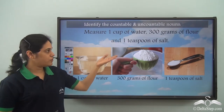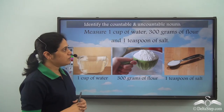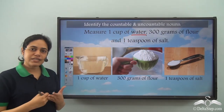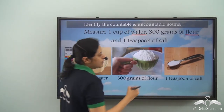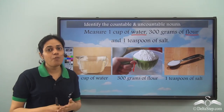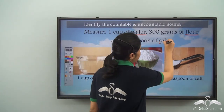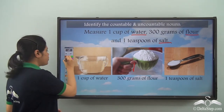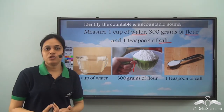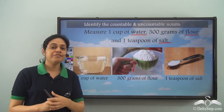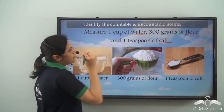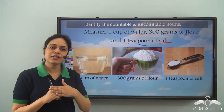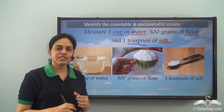Identify the countable and uncountable nouns in this sentence: 'Measure one cup of water, three hundred grams of flour, and one teaspoon of salt.' Water is an uncountable noun. Flour is also uncountable — we can never say 'how many flour.' Salt cannot be counted either. So water, flour and salt are uncountable nouns. What are the countable nouns? Cup — we can count cups, so cup is a countable noun. Similarly, teaspoon — teaspoons can be counted, so teaspoon is a countable noun. In this sentence, cup and teaspoon are the countable nouns.